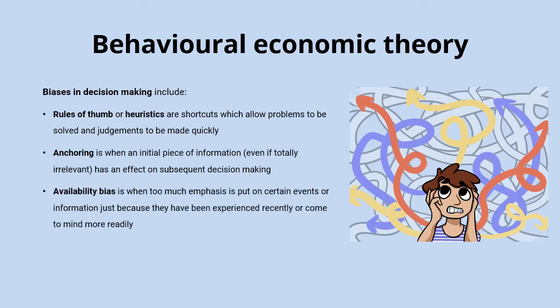Availability bias is when people put too much emphasis on certain events or information just because they've been experienced recently or are fresh in their mind. People often get scared to swim in the sea shortly after seeing a shark attack on the news — there's no greater actual risk, but because it's more in your mind it's more likely to affect your decision making.